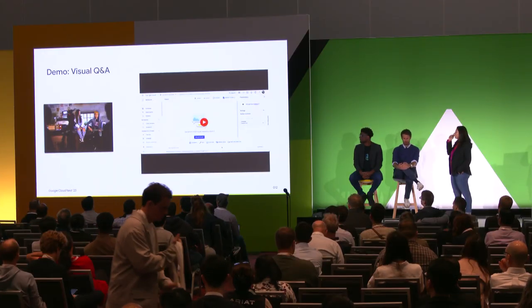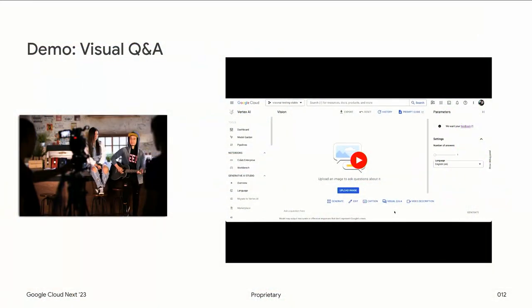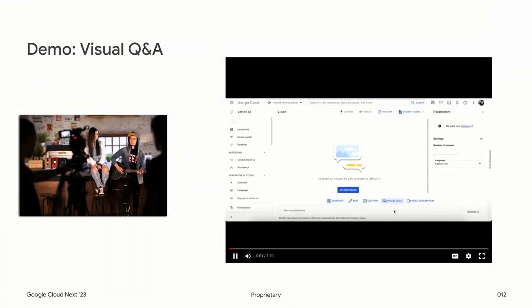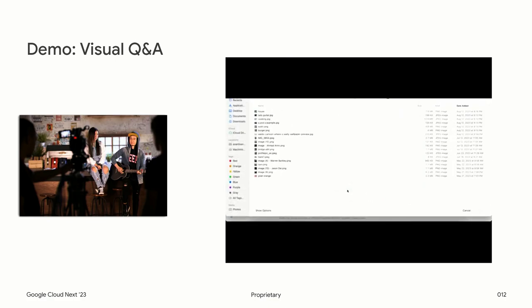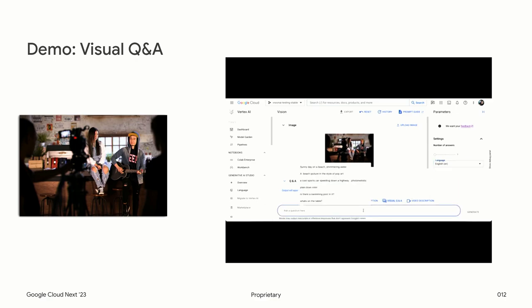Let's look at this demo. The sample image is on the right. In Generative AI Studio, you have a tab called Visual Q&A where you can go and upload an image. You have parameters like number of captions. Right now we only support English for this feature, but we will have multiple language support coming soon.